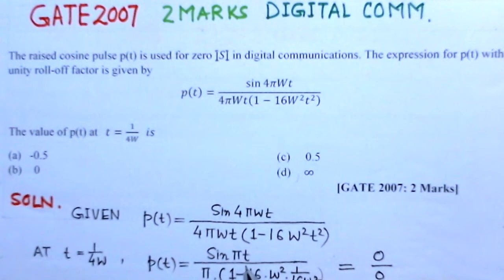So if you substitute the value for t here, which we have already done, this expression because of sin πt, this is 0.